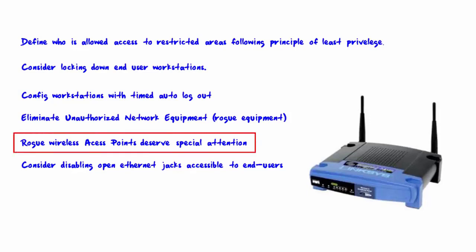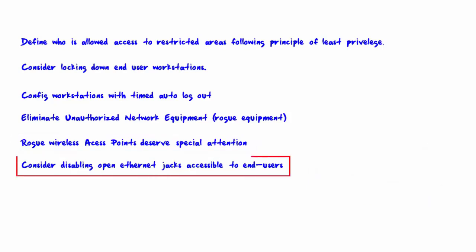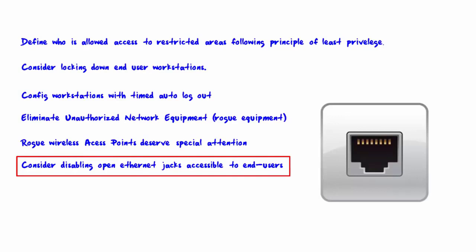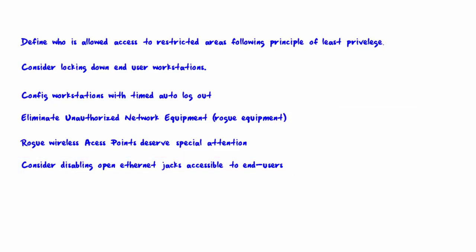Rogue wireless access points deserve special attention — this is a very common type of rogue equipment. The most direct way to find them is to use a program like InSSIDer to view all SSIDs in the area, specifically unauthorized SSIDs. And last, consider disabling open Ethernet jacks accessible to end users. As most rogue equipment must be plugged into an Ethernet jack, that will go a long way to preventing the problem. Cisco does allow you to disable ports on switches.